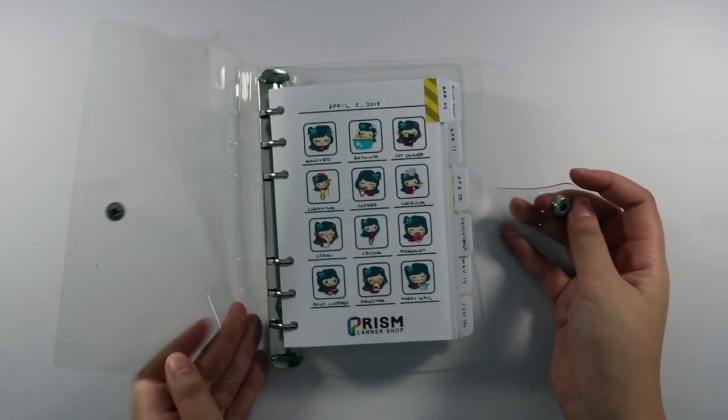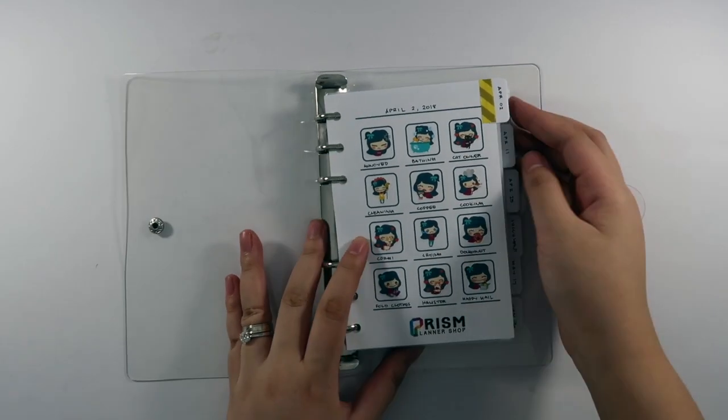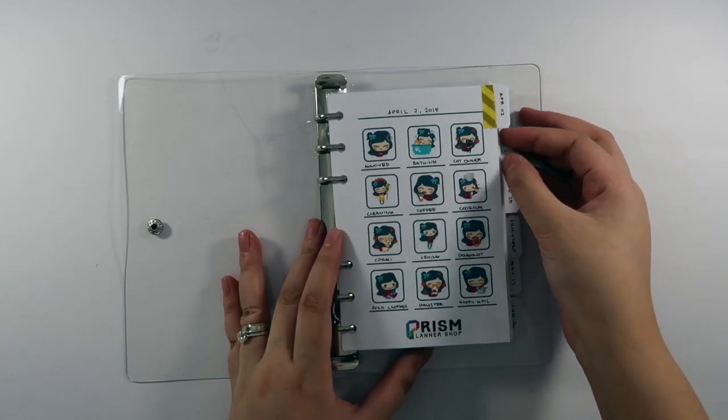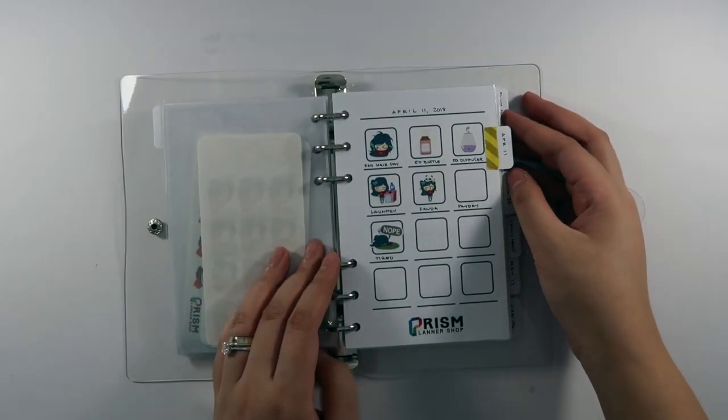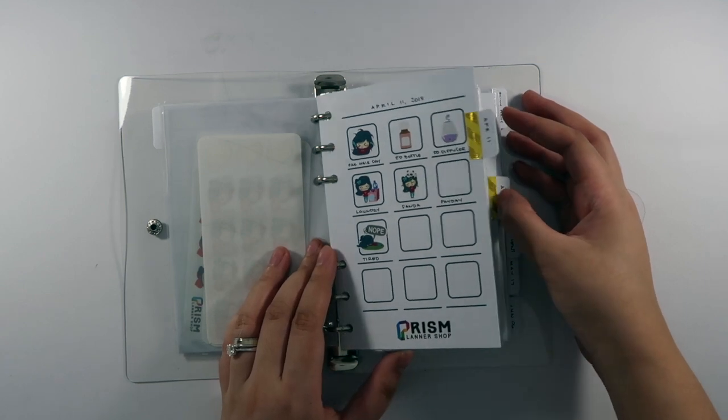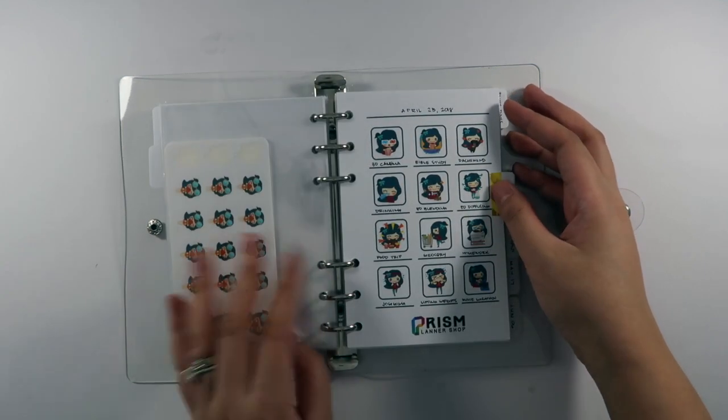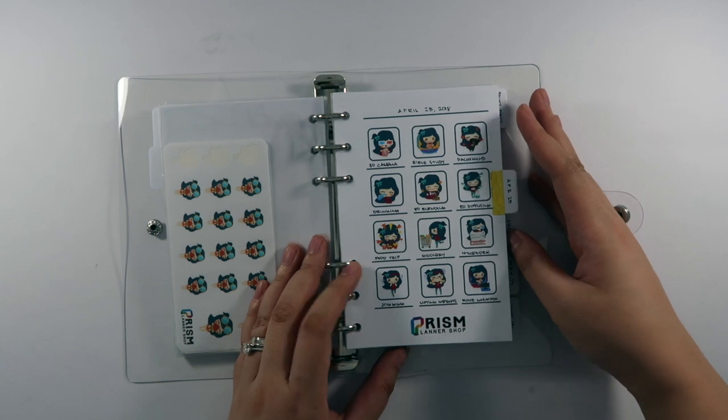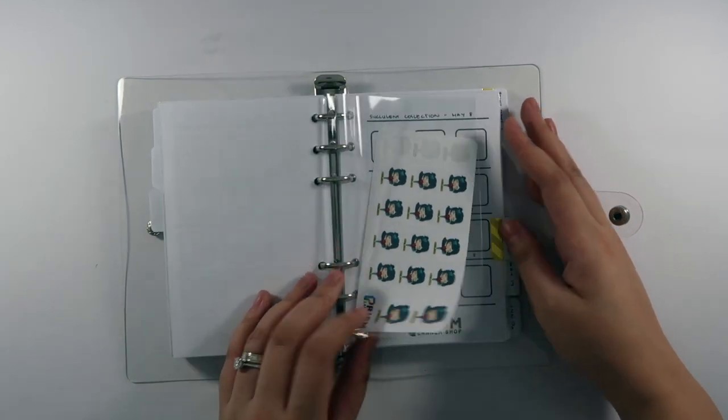You may also add tabs to make the sections easier to find. I've added here temporary tabs to show you. Some groups have more than two sections so this helps in jumping through a specific collection. Hope you guys learned something new and thanks for watching!